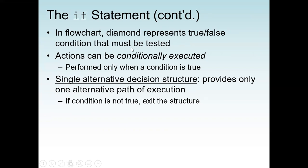In a flowchart, a diamond symbol represents a true or false condition that must be tested. An action can be conditionally executed based on the condition. With the if statement, we only have one way: when the condition is true, the statement executes; when the condition is false, we skip that statement. This is called a single alternative decision structure — it provides only one alternative path of execution. If the condition is not true, we exit the structure. That's why it's called one-way decision making.